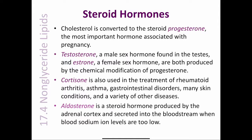Aldosterone is a steroid hormone produced by the adrenal cortex and secreted into the bloodstream when blood sodium ion levels are too low. Upon reaching its target tissues in the kidney, aldosterone activates a set of reactions that cause sodium ions and water to be returned to the blood. If sodium levels are elevated, aldosterone is not secreted from the adrenal cortex, and the sodium ions filtered out of the blood by the kidney will be excreted.